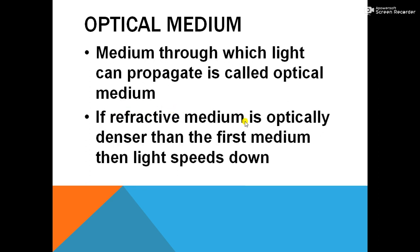If the refractive medium is optically denser than the first medium, then light speeds down. Consider a pair of media: air and water. Light travels from air to water. Comparing air and water, water is optically denser than air. That means inside water, light speeds down — light decreases its speed. So in an optically denser medium, light decreases its speed.